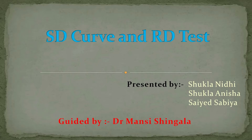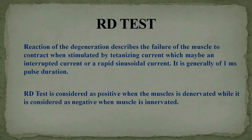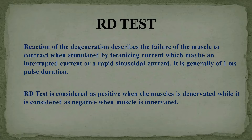Reaction of Degeneration (RD) describes the failure of the muscle to contract when stimulated by tetanizing current, which may be an interrupted current or a rapid sinusoidal current, generally of 1 millisecond pulse duration. The RD test is considered positive when a muscle is denervated, while it is considered negative when the muscle is innervated.